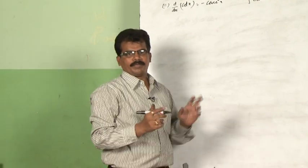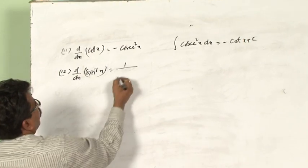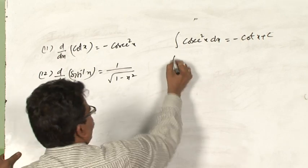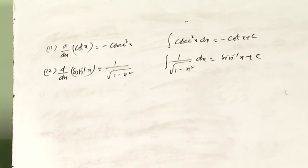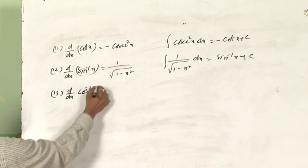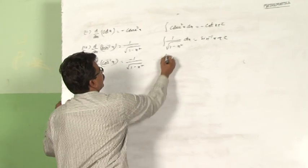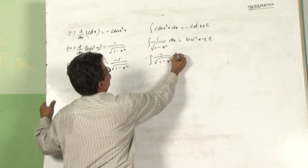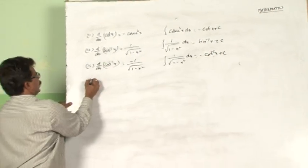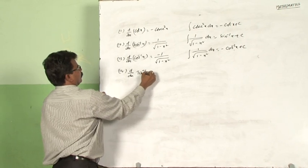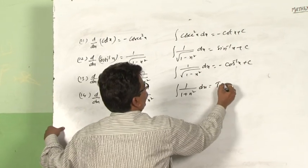Now let us see integrations of inverse trigonometric functions. We have seen d by dx of sin⁻¹x is equal to 1 by root of (1 minus x²). Therefore, integral of 1 by root of (1 minus x²) dx is equal to sin⁻¹x plus c, where c is the constant of integration. Next, d by dx of cos⁻¹x is equal to minus 1 by root of (1 minus x²). Therefore, integral of 1 by root of (1 minus x²) dx equals minus cos⁻¹x plus c. Also, d by dx of tan⁻¹x is equal to 1 by (1 plus x²), so integral of 1 by (1 plus x²) dx is equal to tan⁻¹x plus c.